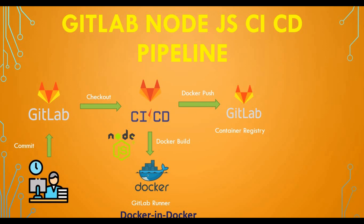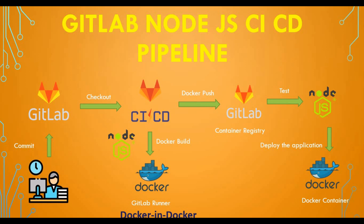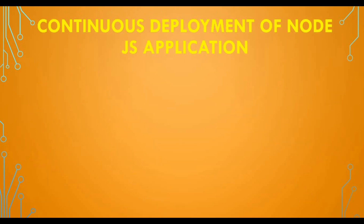From here, we will test our Node.js application using the image we create. Once we create the image we will test the application, and if it passes the test then we will deploy our application as a Docker container using that image. All of this will be a pipeline script — once you make some changes in your code this will automatically happen.